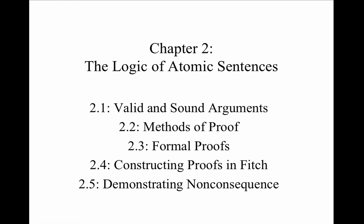Now that we know what an atomic sentence is, what its constituents are, and how to create one in our notation, we're going to move on to the discussion of correct inferences. The focus of this chapter is distinguishing between logically correct and incorrect inferences. We're going to use terminology such as validity and invalidity, logical consequence, non-consequence, and related concepts: soundness and unsoundness.